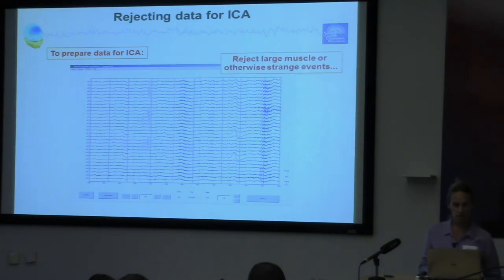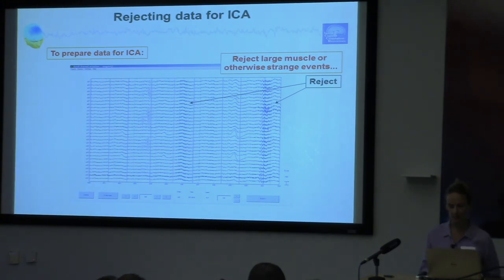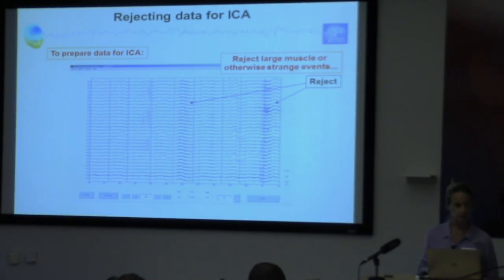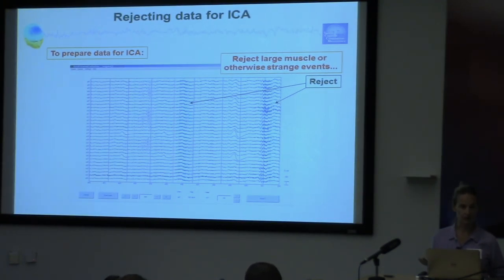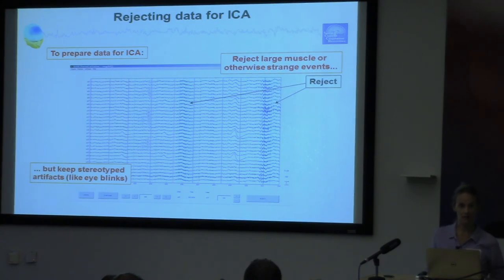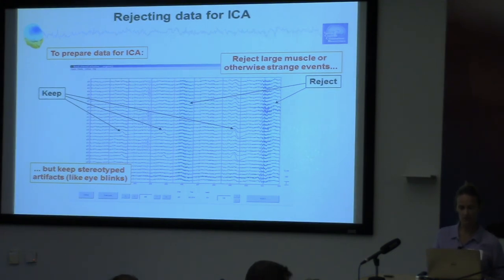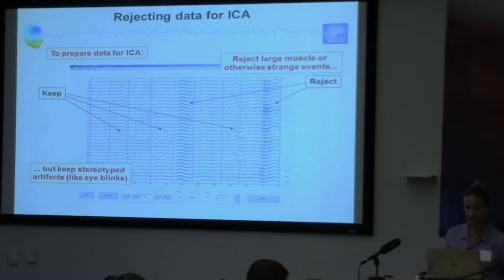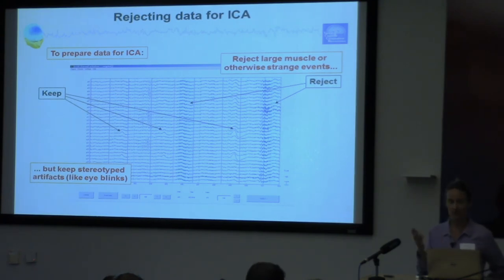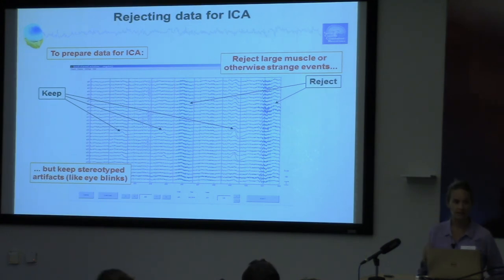Preparing for ICA: the general rule is that you want to reject large muscle or otherwise strange artifacts or events — things that are very large. However, you want to keep stereotyped artifacts like eye blinks, because ICA is very good at taking those out, and that's better than discarding perfectly good data. Even muscle artifacts are sometimes okay to keep. The large artifacts I rejected were ones going through all of the channels; if it's just your temporal electrode with a lot of muscle, ICA might be able to take that out.